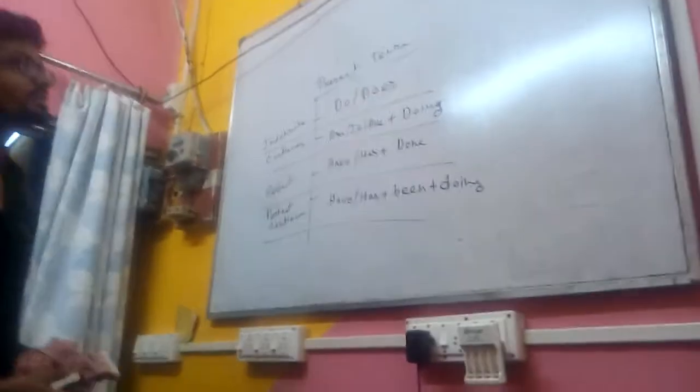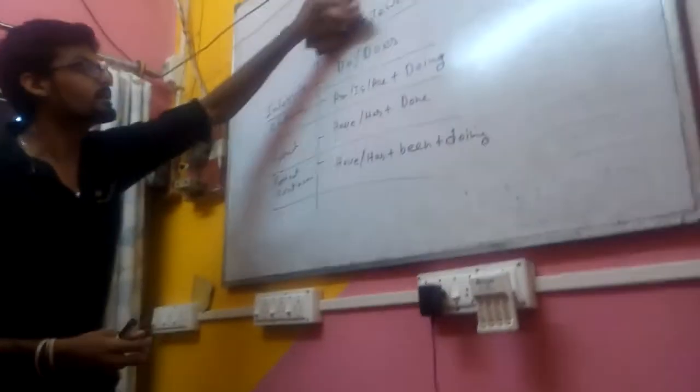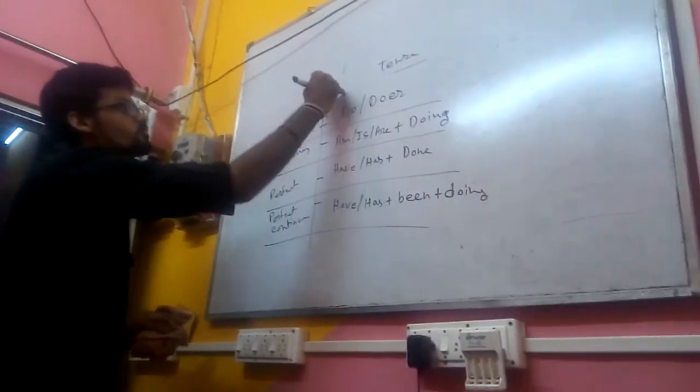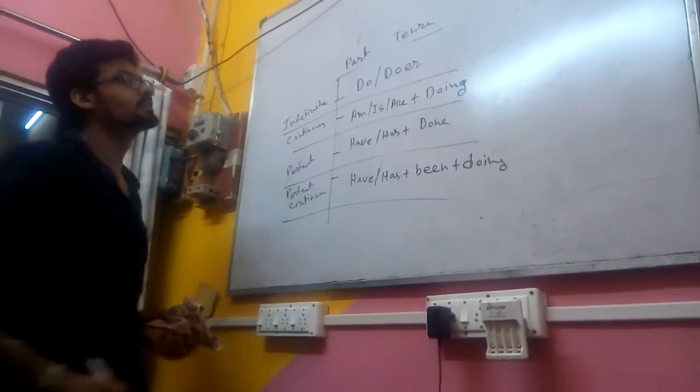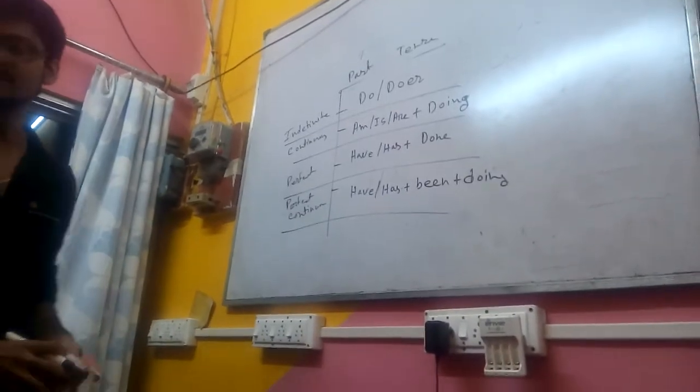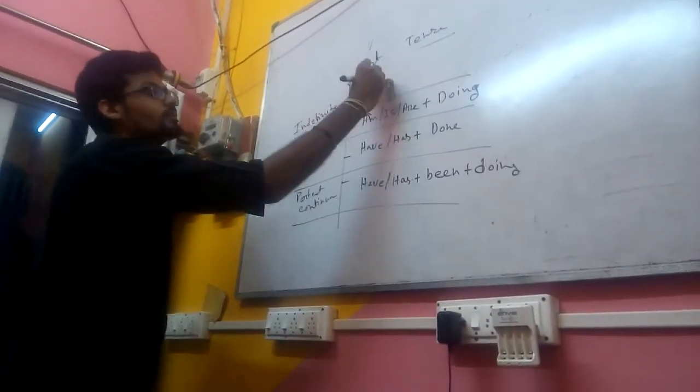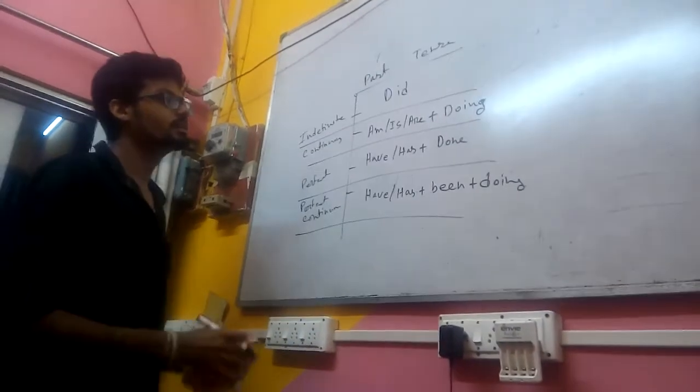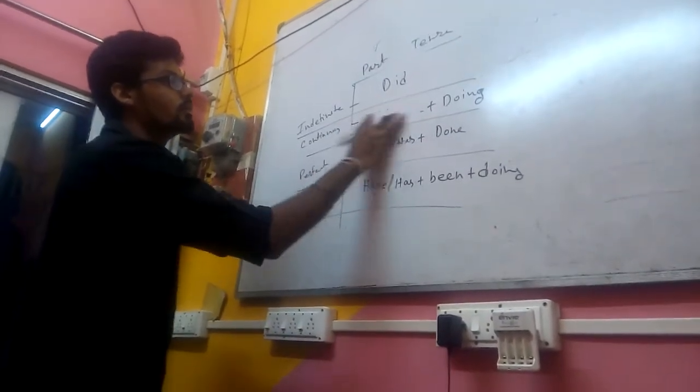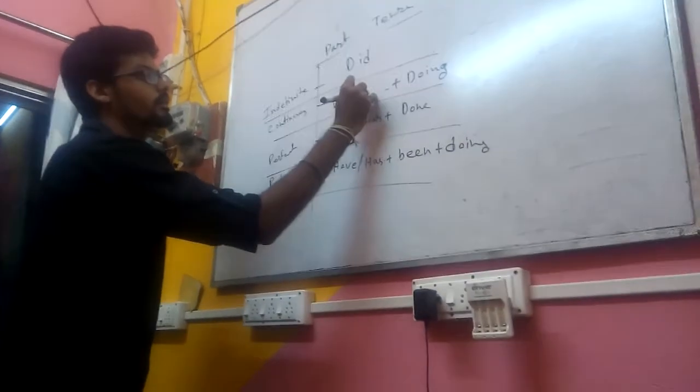This was the structure of present tense. If we change it to past tense, the structure is very similar. In place of 'do/does,' we write 'did.' In place of 'am/is/are,' we write 'was/were.'